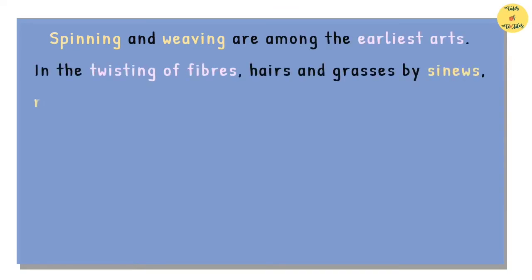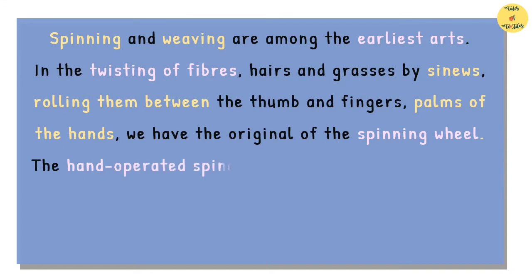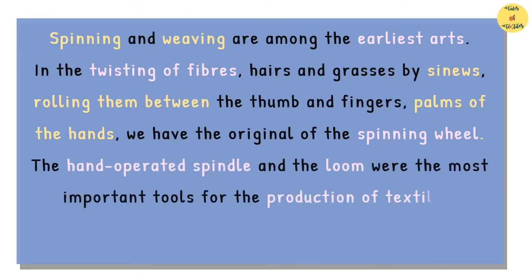Spinning and weaving are among the earliest arts. In the twisting of fibers, hairs and grasses by sinews, rolling them between the thumb and fingers, palms of the hands, we have the original of the spinning wheel. The hand-operated spindle and the loom were the most important tools for the production of textiles.